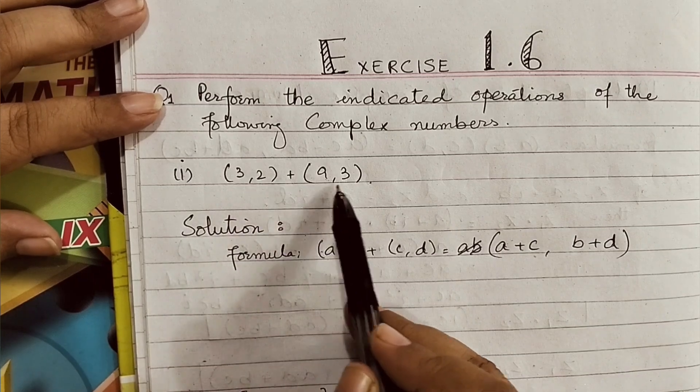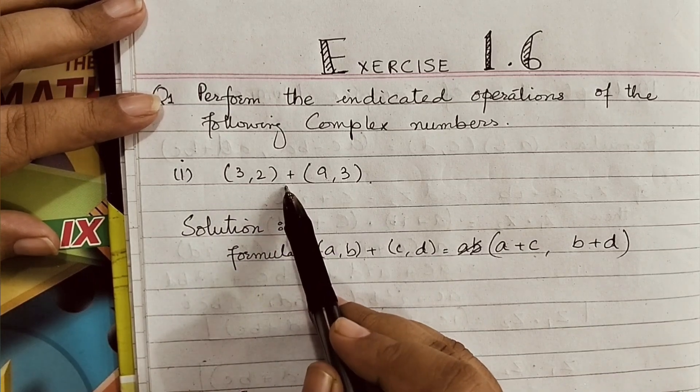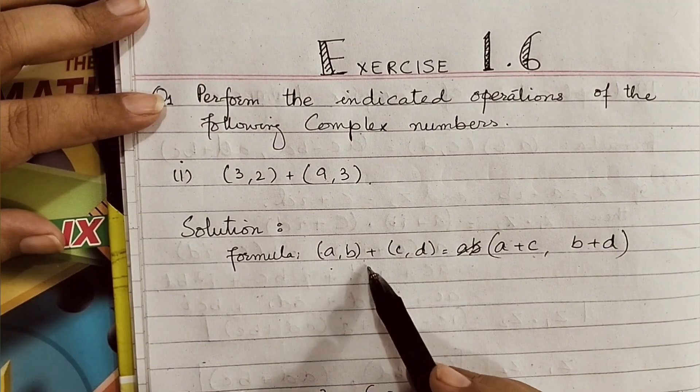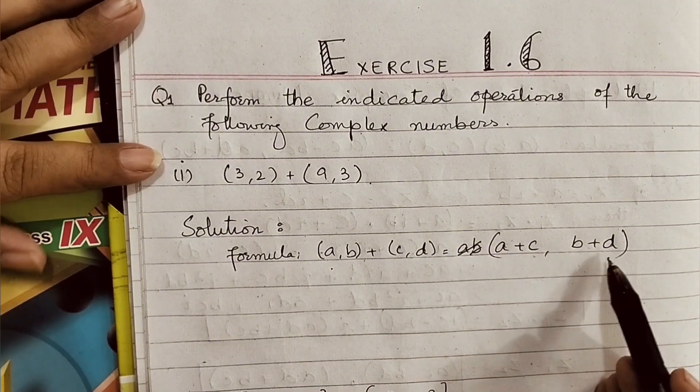we have (3, 2) plus (9, 3). So with the plus sign here, we will use the identity which is: (a, b) plus (c, d) is equal to (a plus c, b plus d).